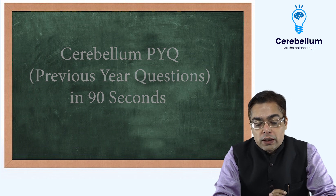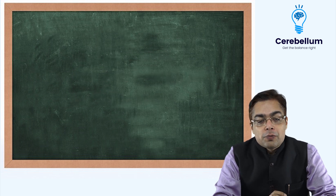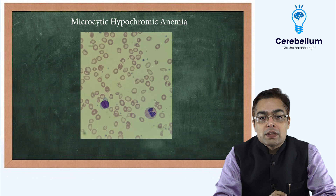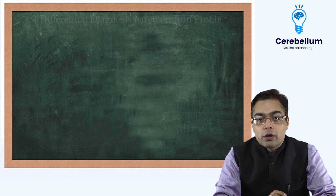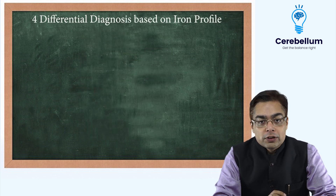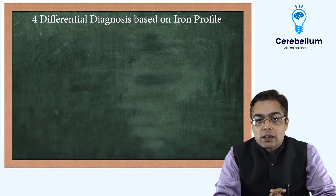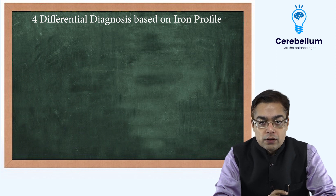Associated with it, there is a peripheral smear image which is associated with the presence of a microcytic hypochromic anemia. Now you have four important differential diagnoses which is going to be solved by revising the RN profiles given in the question.